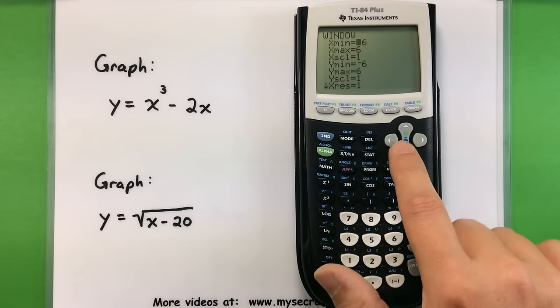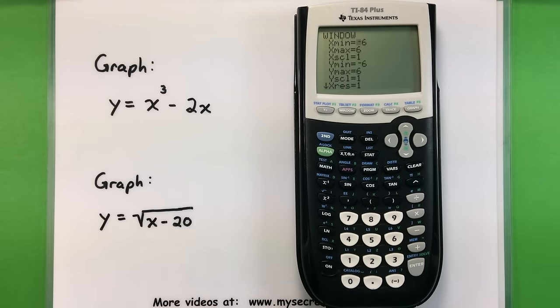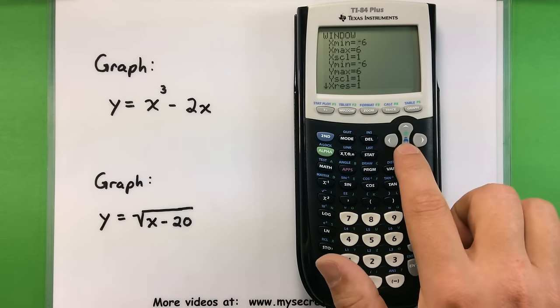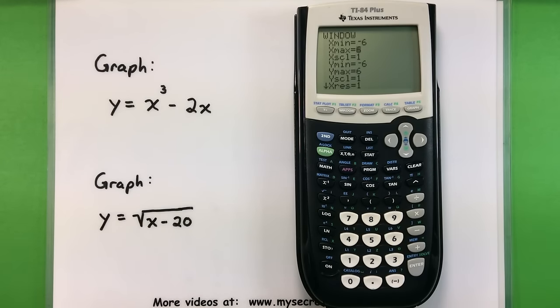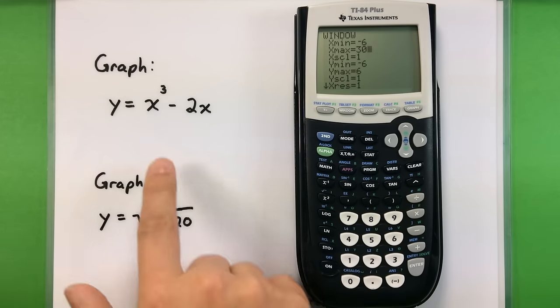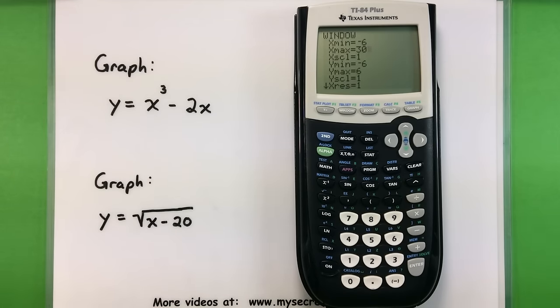So let's go into window. I'm going to set my X minimum. I'm going to leave that at negative 6. Why not? But I'm going to bump up the X maximum to something like 30. That way I can actually see what's going on with the second graph. So now my X is somewhere between negative 6 and 30. The Y is exactly the same between negative 6 and 6. And now let's go ahead and see what our graph looks like now.